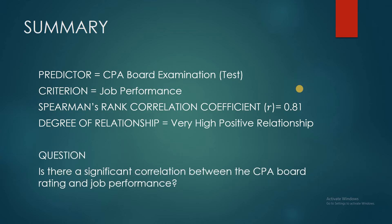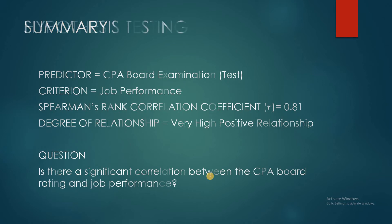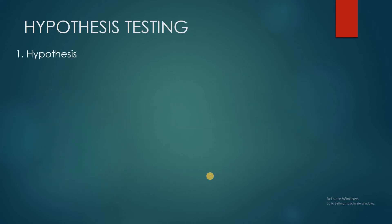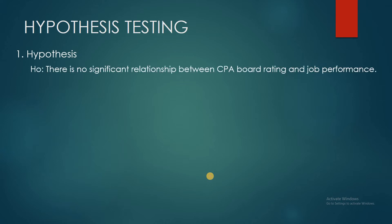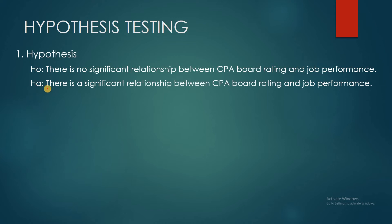Now the question is: is there a significant correlation between the CPA board rating and job performance? We computed the correlation as 0.81 and it's a very high positive relationship. However, is this significant? We need hypothesis testing to answer this. The first step is to state your hypotheses. The null hypothesis HO: there is no significant relationship between the two variables. The alternative hypothesis H1: there is a significant relationship between the two variables. Step two: since the n value — the number of pairs — is less than 30, we will use the t-test statistics.